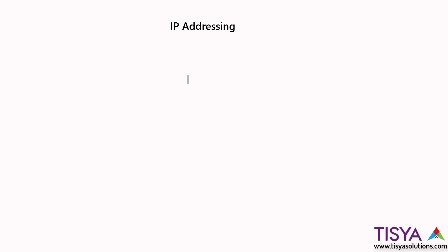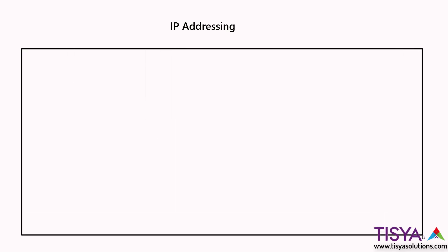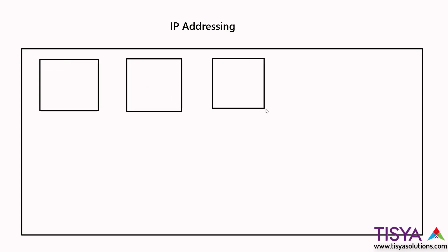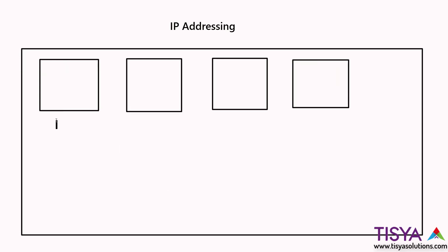In this video we're going to understand IP addressing. Internet Protocol addressing is basically a means of identifying every computer uniquely in a network. Let's say we have a network, which I will represent by this huge rectangle, and within this I have various computers. I want each computer to be identified uniquely — the computers need to understand each other uniquely and identify themselves, for which we need a means of identifying them.